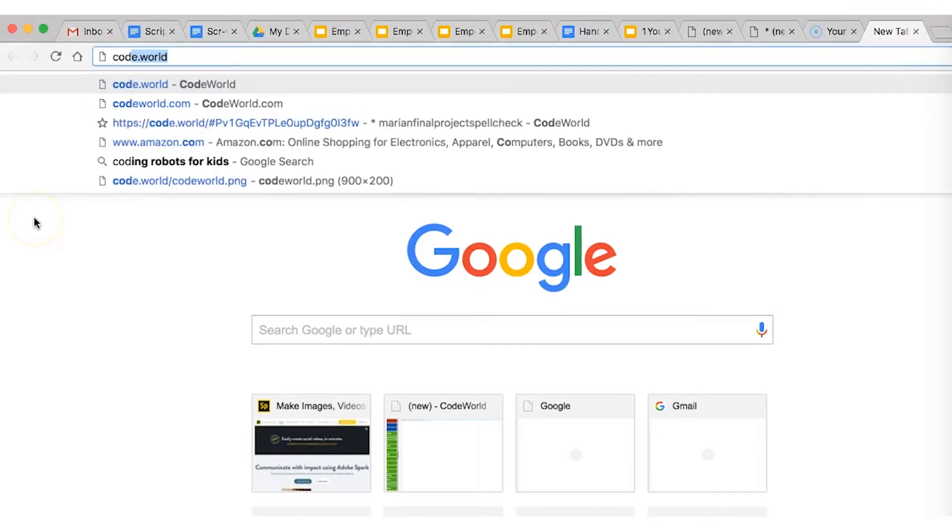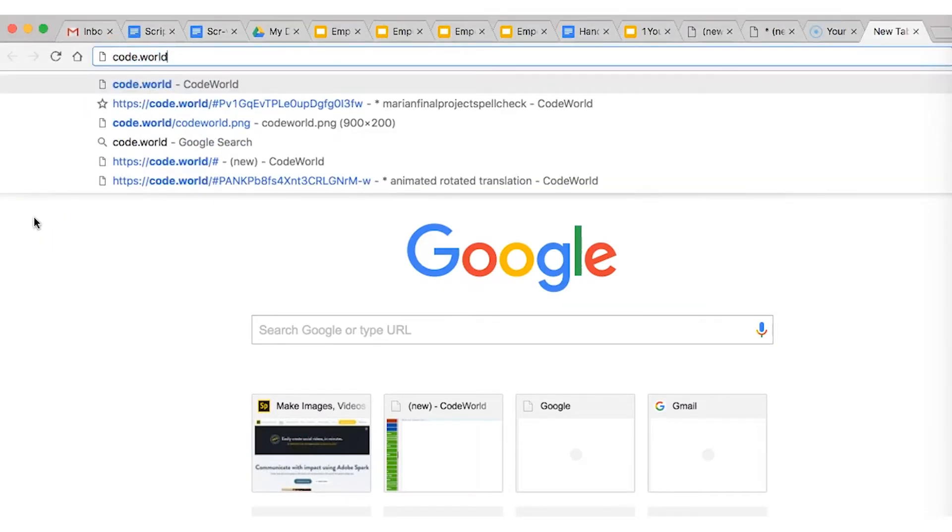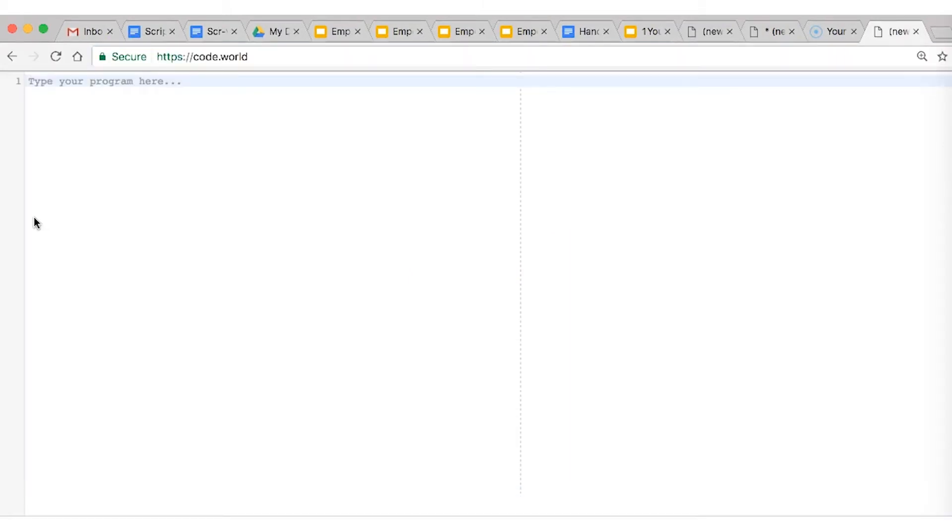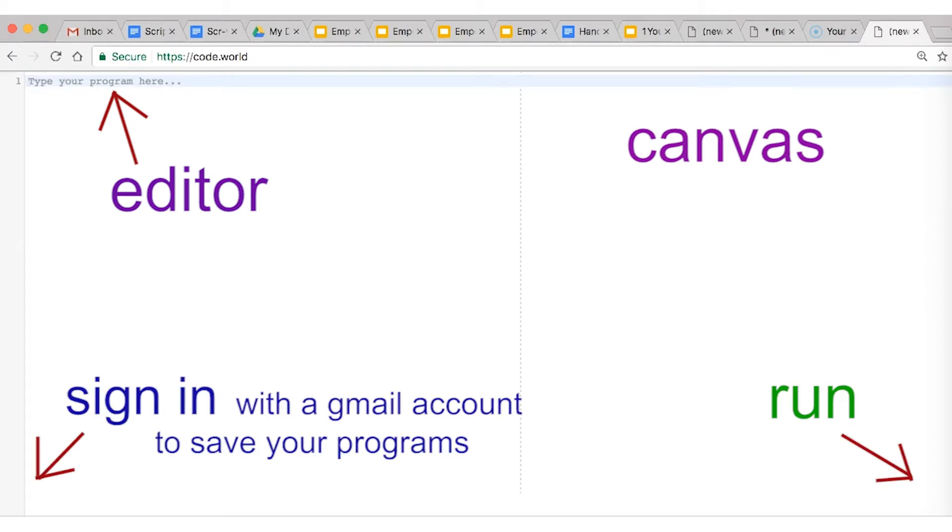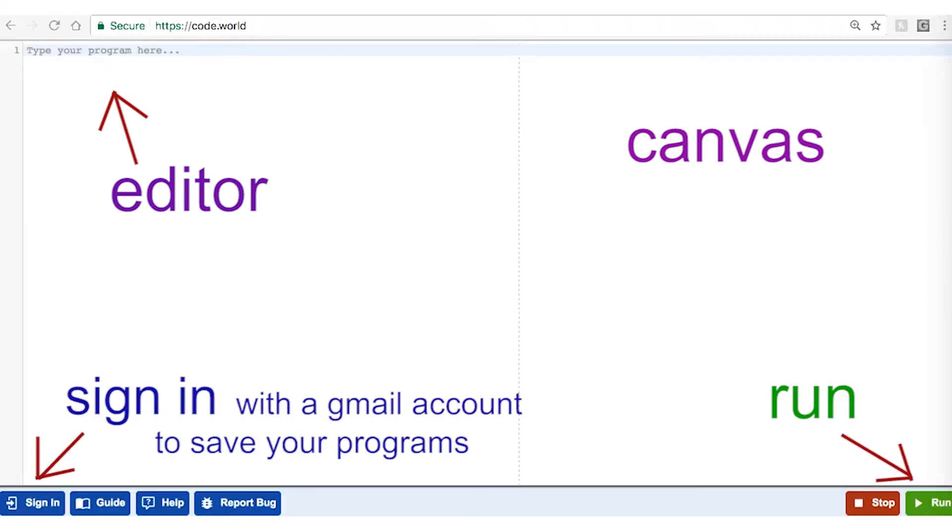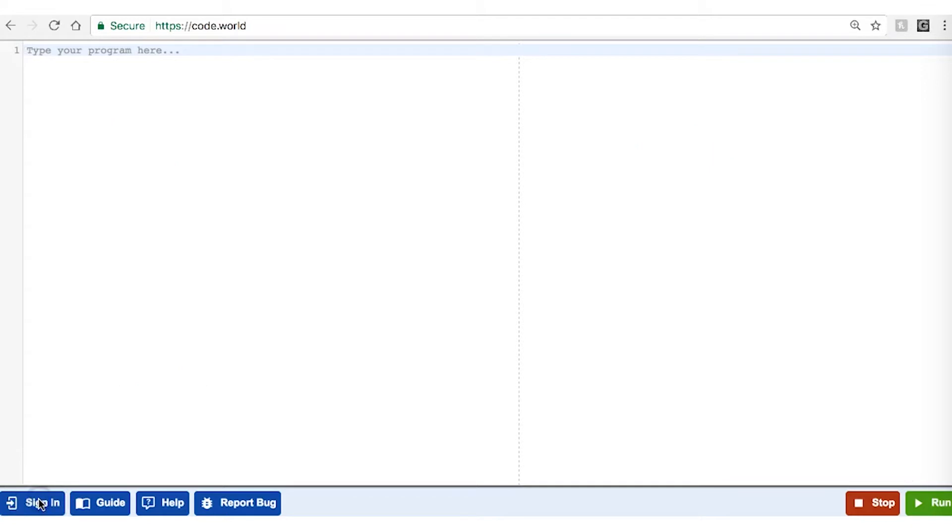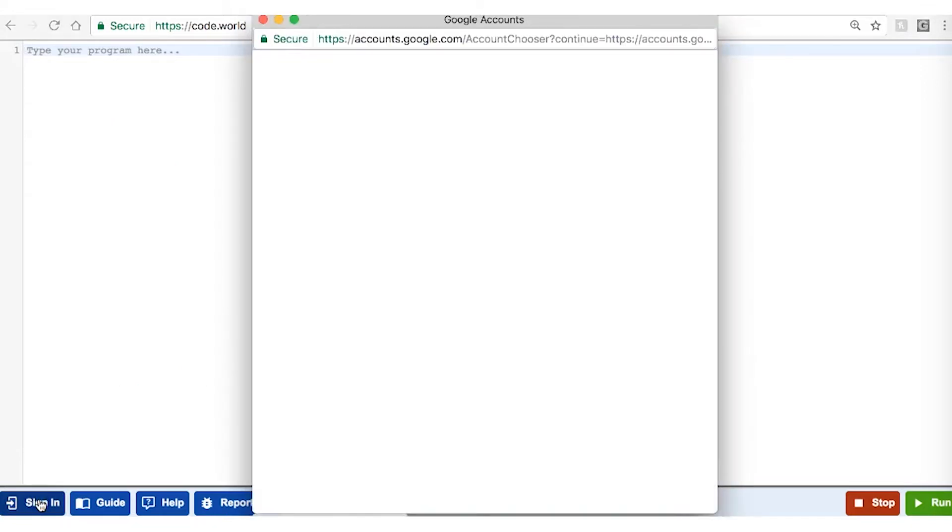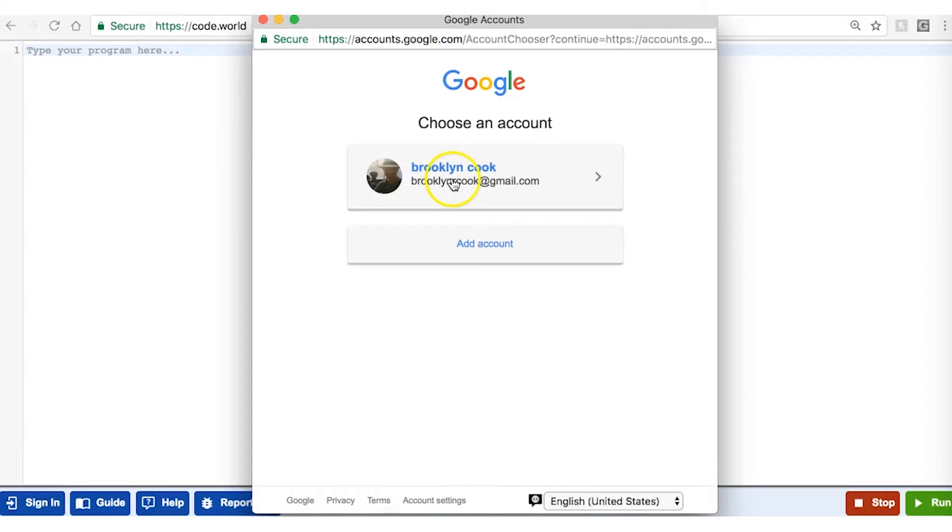This will take you directly to the screen where you write your code and see the results. The left side of the screen is your editor. This is where you type your code and write your programs. The other side is the canvas, where your drawing or animation will pop up when you run it. Run is in the bottom right-hand corner. Once you write your code, push run and your program will pop up on your canvas.